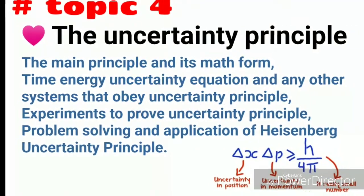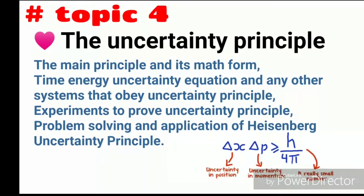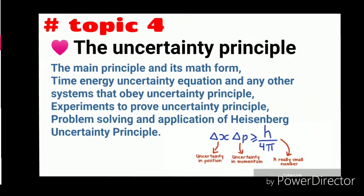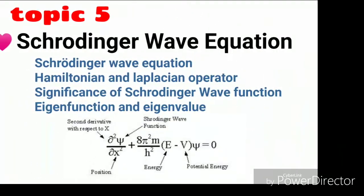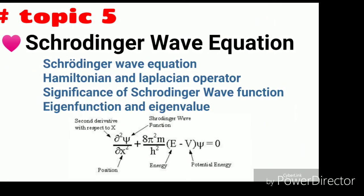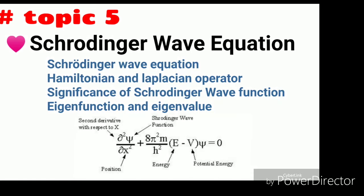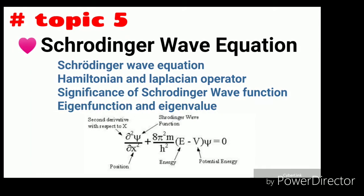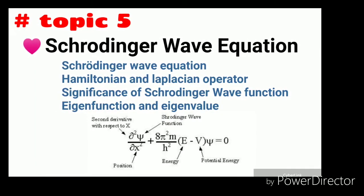The fifth option is Schrödinger wave equation. Remember the Schrödinger wave equation carefully, and also the Hamiltonian and Laplacian operator, the significance of the Schrödinger wave function, eigenvalues, eigenfunction, and the conditions of the acceptable wave function.